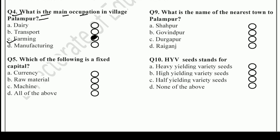Question number 5: Which of the following is a fixed capital? Options are: Currency, Raw material, Machine, or All of the above. The right answer is C — Machine, because currency and raw material are working capital, not fixed capital.